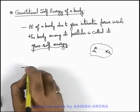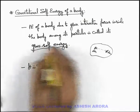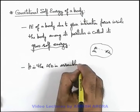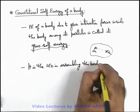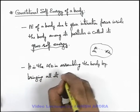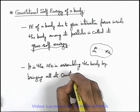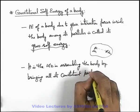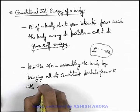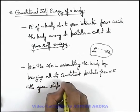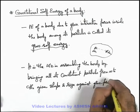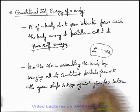Another point we can write: the gravitational self energy of a body is the work done in assembling the body by bringing all its constituent particles from infinity to the given shape and size, against the gravitational forces between these particles.